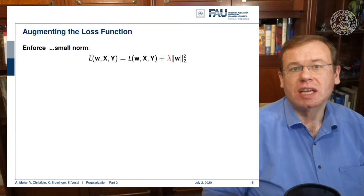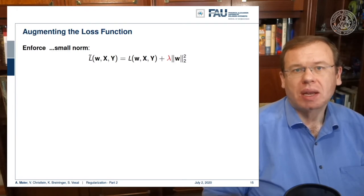If you start with the MAP estimate, you essentially end up with a very similar estimate, but the shape of this loss function has slightly changed. So we get a new loss function L tilde. It's like the L2 loss or the cross entropy loss plus some lambda and some constraint on the weights w. So here we enforce a minimum L2 norm.